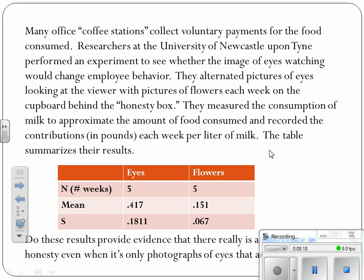So let's do one quick example. So here's an example, some research done by the University of Newcastle about coffee station and voluntary collections. So they alternated pictures of eyes looking at the viewer and flowers looking, and then it's an honesty box where people would put in contributions depending upon how much milk or food they took from the coffee station.